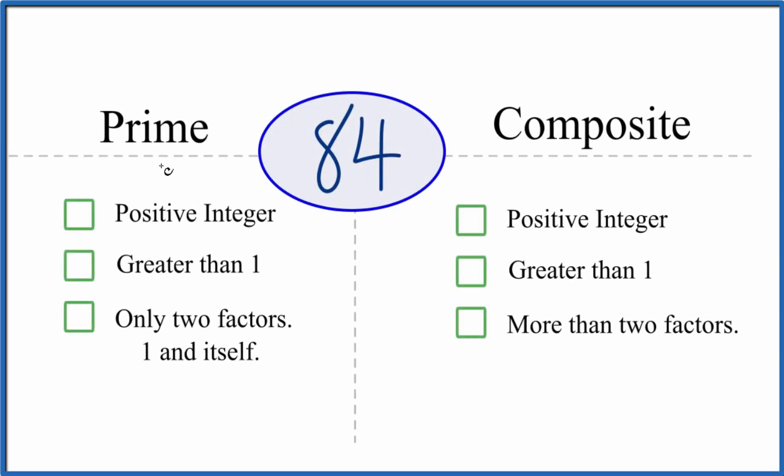If you're asked to figure out whether 84 is a prime number or a composite number, here's how you do it. So let's look and see whether 84 is a prime number first.